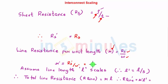So r' is going to be equal to Rs' upon W'. We know that Rs' is same as Rs. It does not change and W' is W/S which we just saw. So this is nothing but S × Rs/W which is nothing but S × r. It says that the line resistance per unit length increases by a factor of S. Let's see what happens because of this.